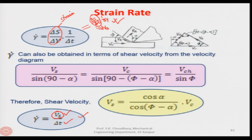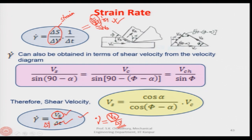Please make this correction: this can be written as delta s by delta t, which is Vs. So what we can find out is that the shear strain rate is equal to Vs divided by delta y. If we know the Vs for any given delta y, you can find out what the strain rate is.